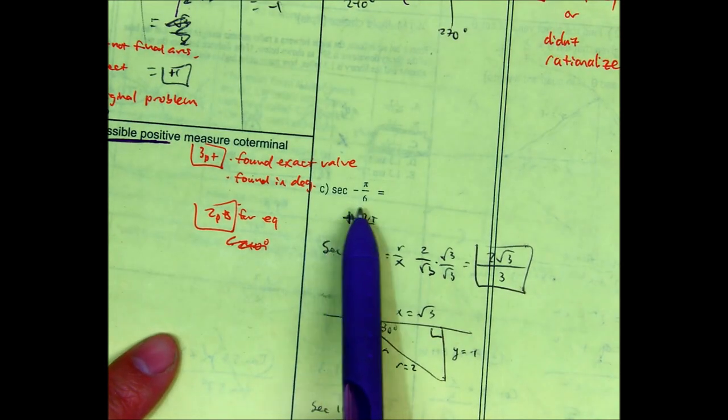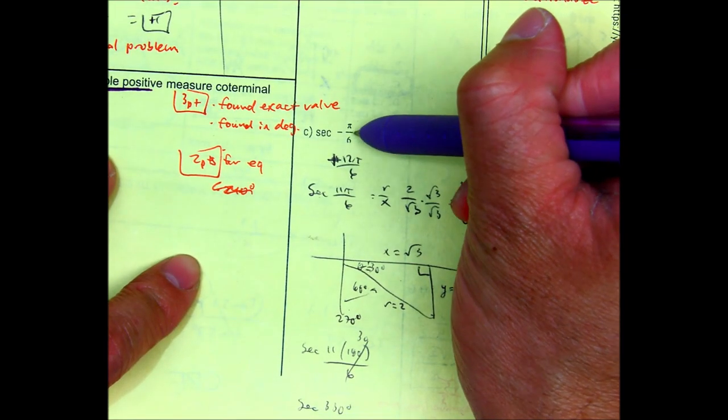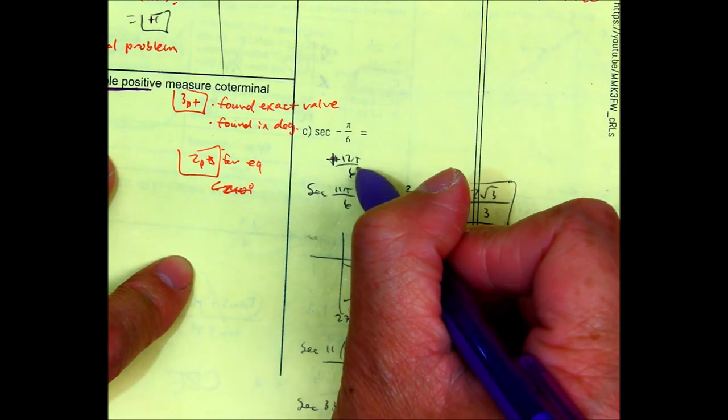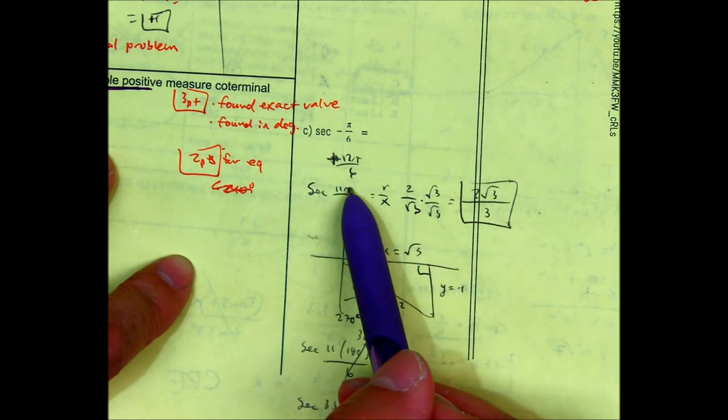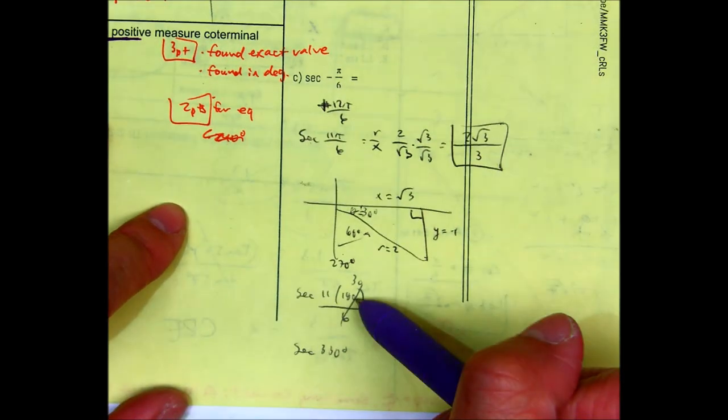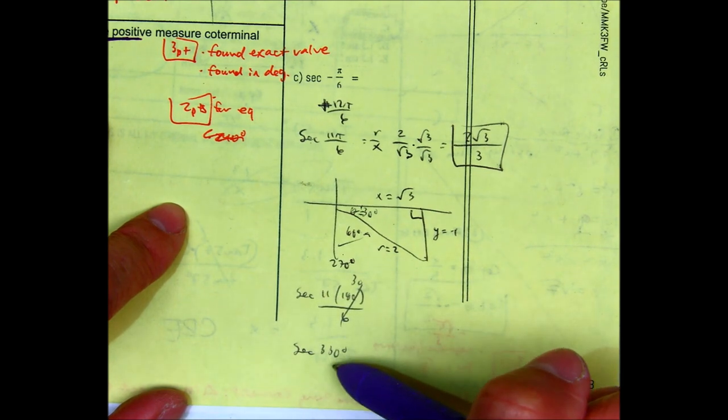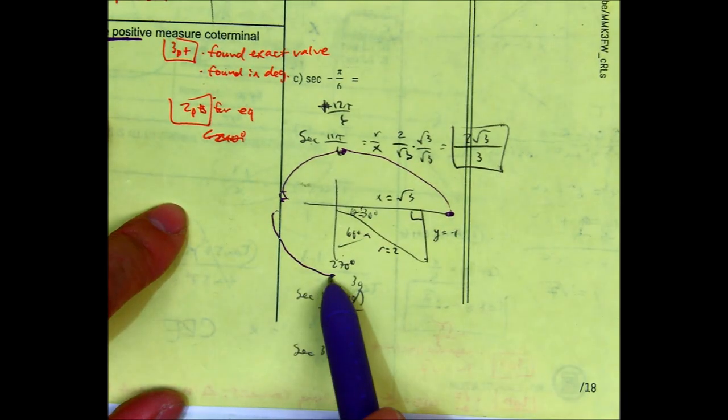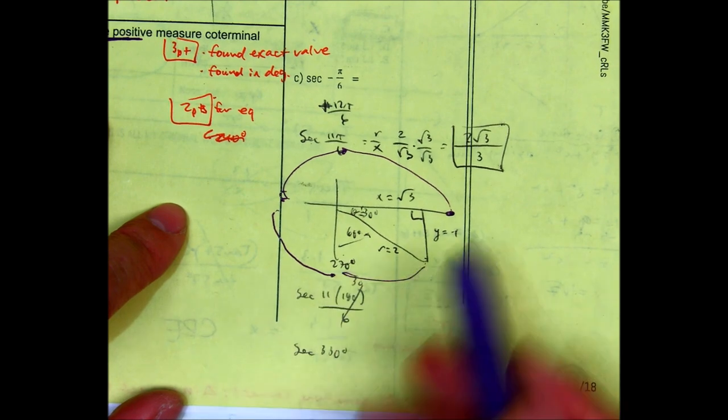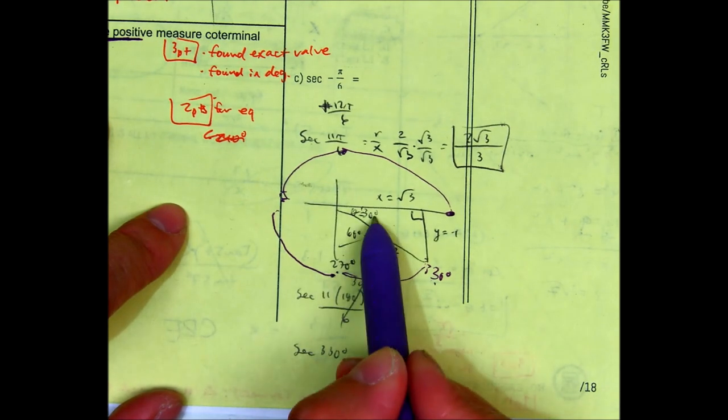And the last problem. Secant at negative pi over 6. Notice that this problem is not between 0 and 2 pi, so I found a coterminal angle. Add 12 pi over 6. The reason why I'm adding 12 pi over 6 is essentially doing a full rotation. That gives me 11 pi over 6. Remember, pi is 180 degrees. 180 divided by 6 is 30. So essentially, we're finding secant of 11 times 30, which is 330. You have 0, 90, 180, 270. To go to 330 degrees, 330 minus 270 is 60. That means this angle is 30. The reference angle is 30.